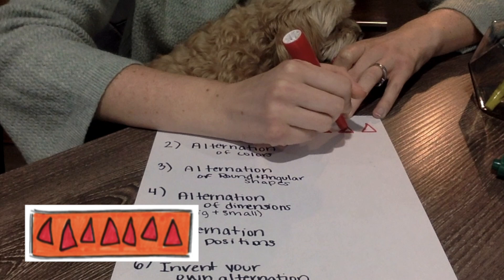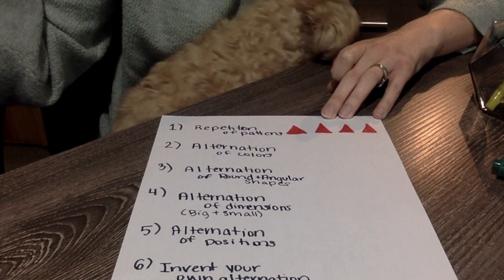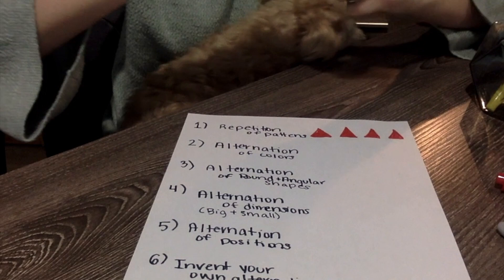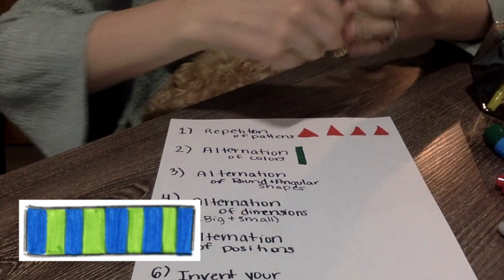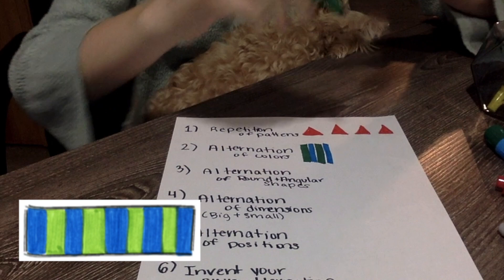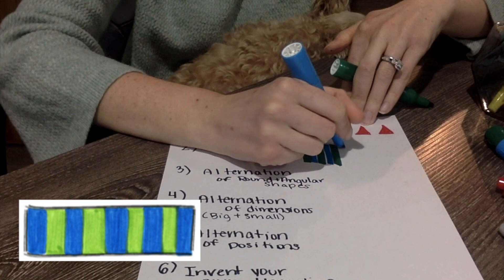Now number two asks for an alternation of colors, so I'm just gonna take a green and a blue and I'm gonna do green, blue, green, blue. So you're just alternating or switching off the two different colors that you got there.